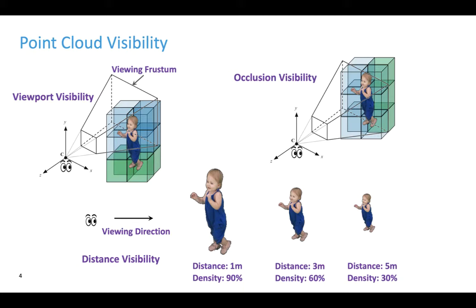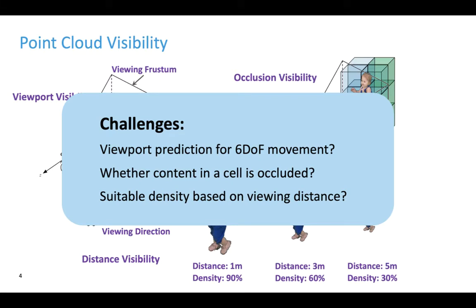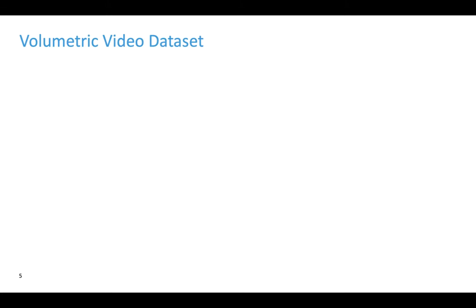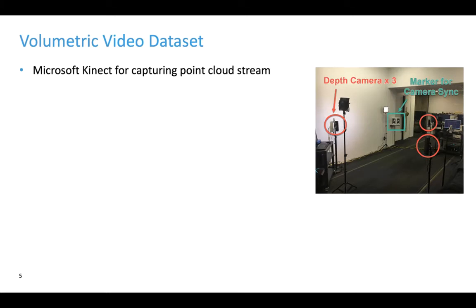All this sounds promising. However, there are several challenges here. For example, how to determine whether content in a cell is occluded, and how to know the most suitable point density given the viewing distance. Before addressing these challenges, let me first introduce the volumetric video dataset for this study. Since volumetric videos are not yet widely available, we captured multiple videos ourselves.